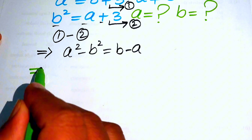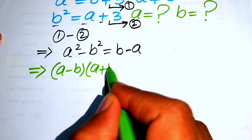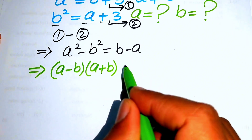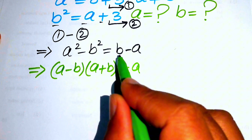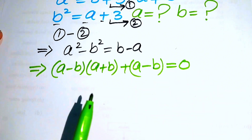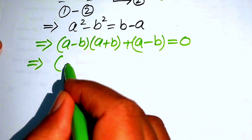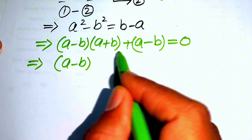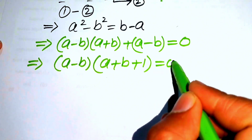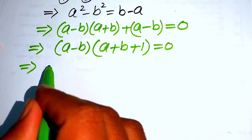On the left hand side we apply the difference of squares identity: a squared minus b squared equals (a minus b)(a plus b). We move b minus a to the left hand side, giving (a minus b)(a plus b) plus (a minus b) equals zero. Factoring out (a minus b), we get (a minus b)(a plus b plus 1) equals zero.